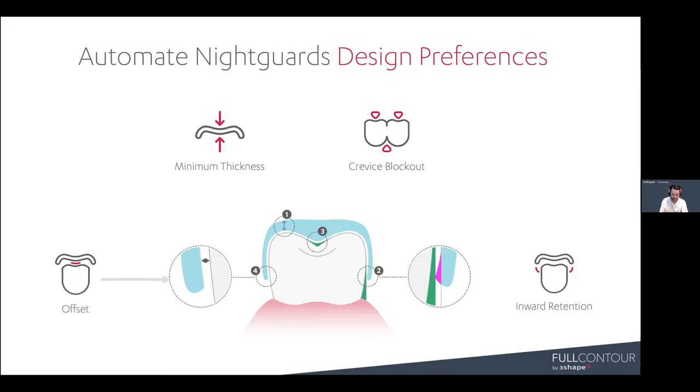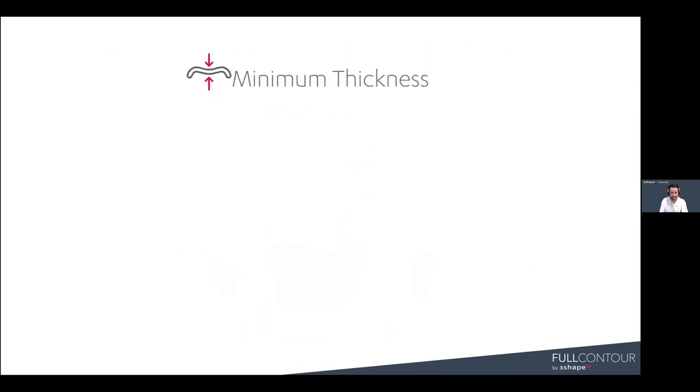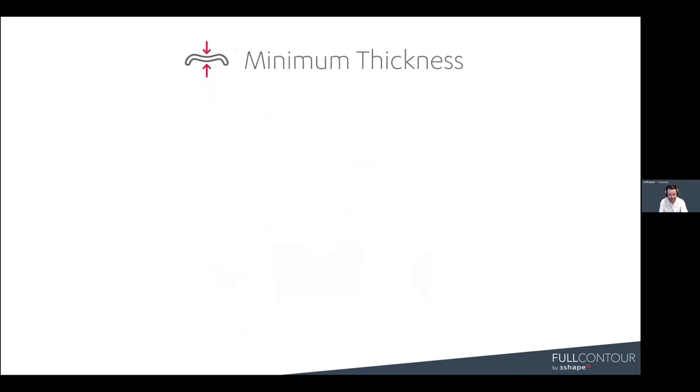The offset is simply the space between the Nightguard and the teeth. So now we're going to go a little bit deeper into minimum thickness.